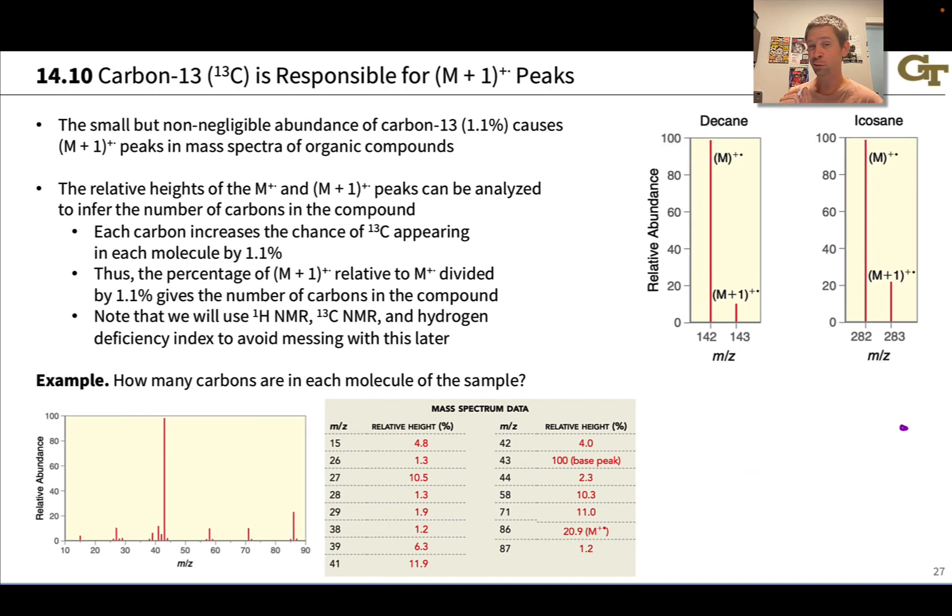There's a small but non-negligible amount of this isotope of carbon in any natural sample of an organic compound. It's about 1.1% carbon-13 relative to carbon-12, and this adds up as we add carbons to the molecules.